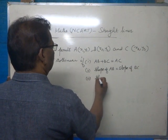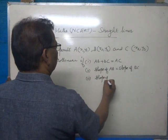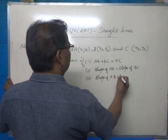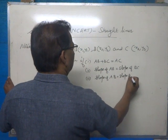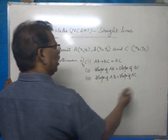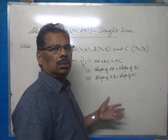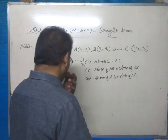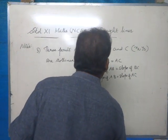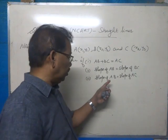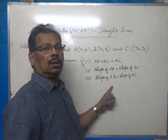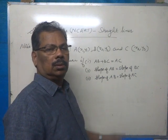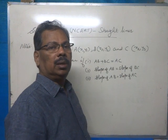Or if the slope of AB is equal to the slope of AC, in that case also the points will be collinear. Or if the slope of BC is equal to the slope of AC, in that case also the points will be collinear.